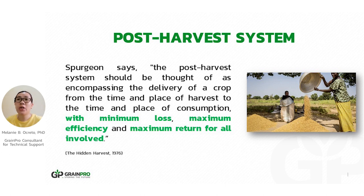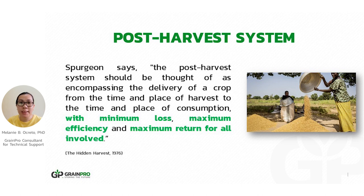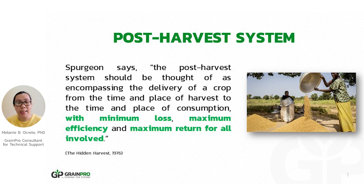Spurgeon says the post-harvest system should be thought of as encompassing the delivery of a crop from the time and place of harvest to the time and place of consumption with minimum loss, maximum efficiency, and maximum return for all involved. Meaning, we have to consider a process, method, or technology that could minimize such losses and address and prevent post-harvest losses.